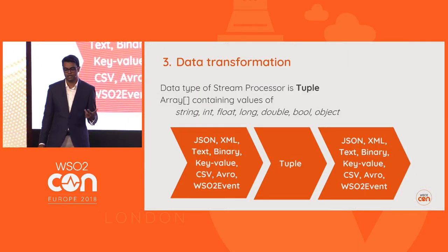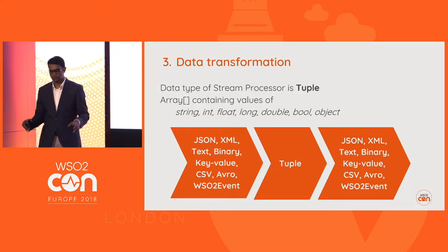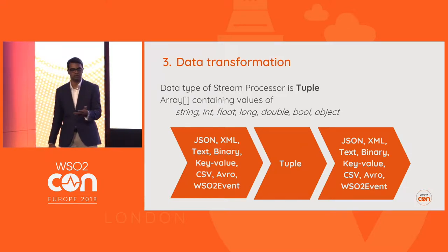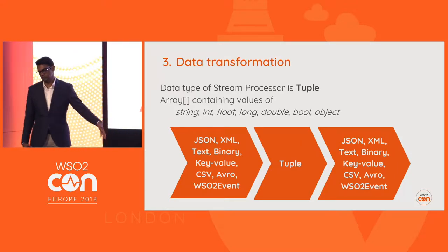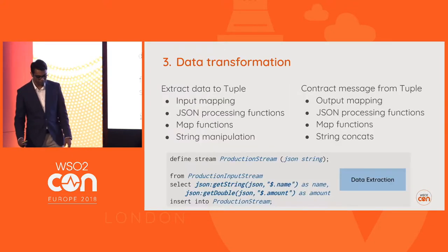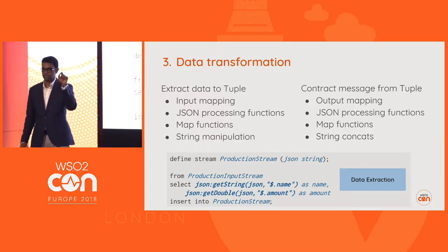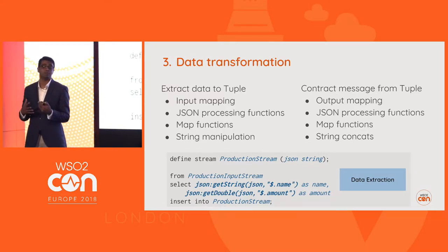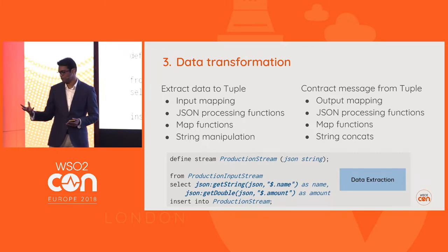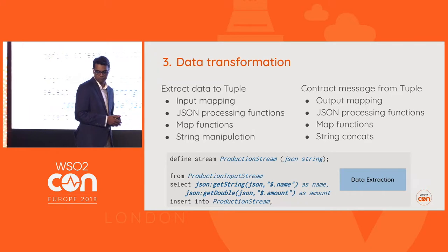You can also do data transformations. Incoming data can be in any format, but WSO2 Stream Processor internally processes a tuple — an array of values containing string, int, float, long, double, bool, or even an object like JSON. Input mapping converts incoming data to a tuple. You can use JSON processing functions, map functions, and string manipulation to extract data. Then output mapping rebuilds the data using JSON processing functions, map functions, and string functions.